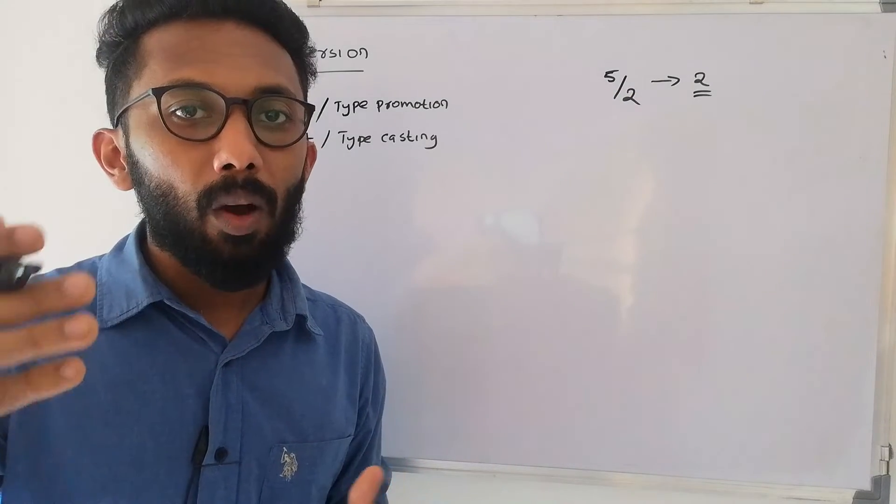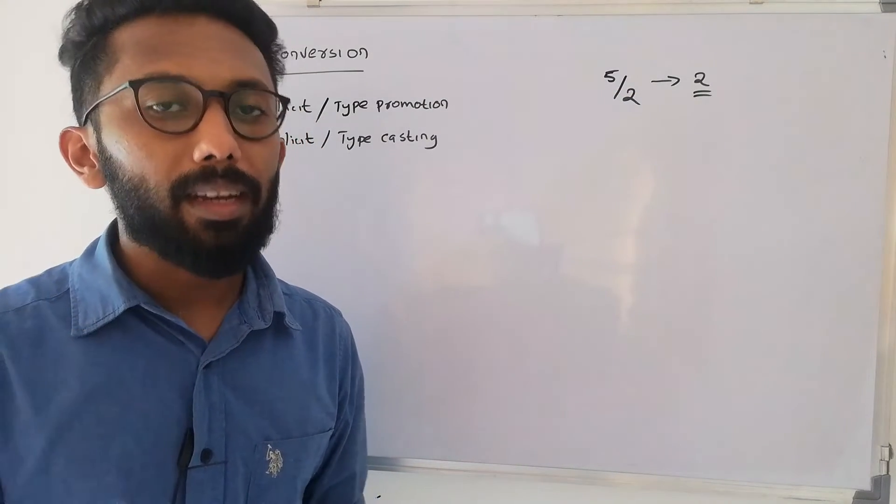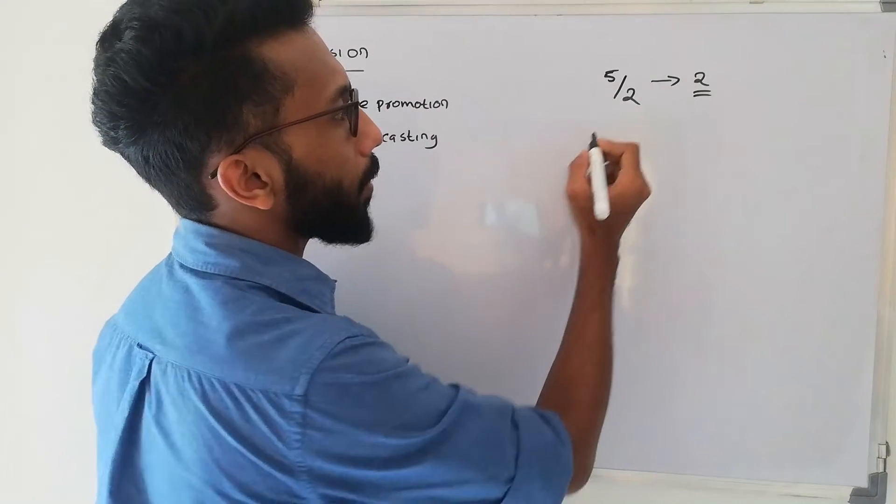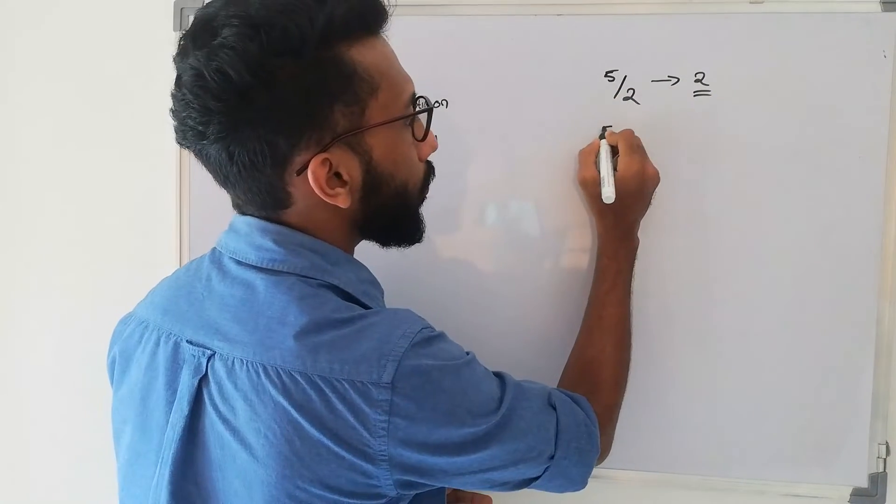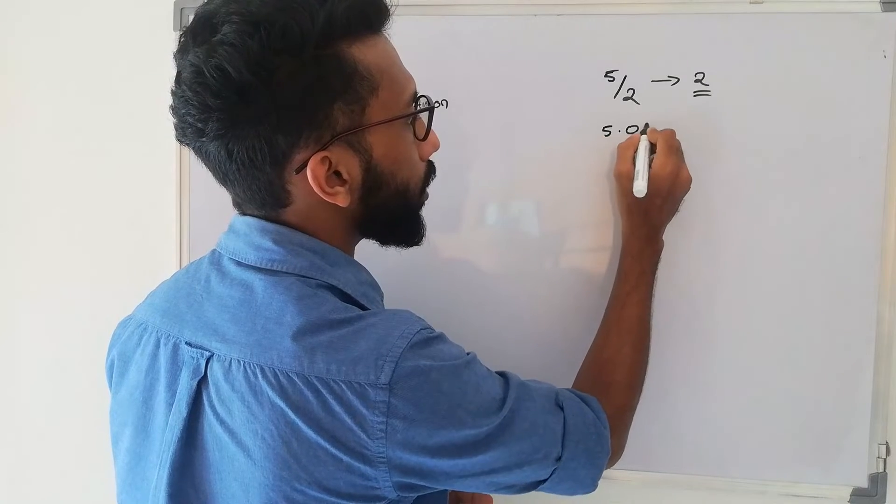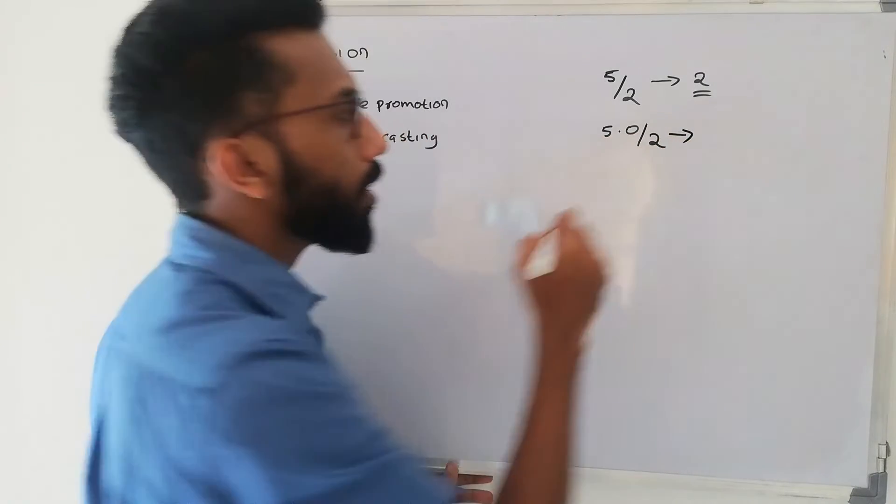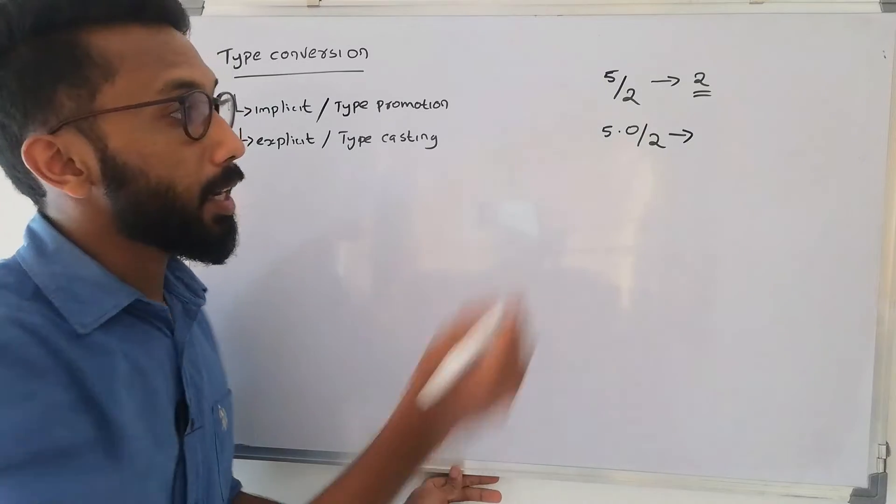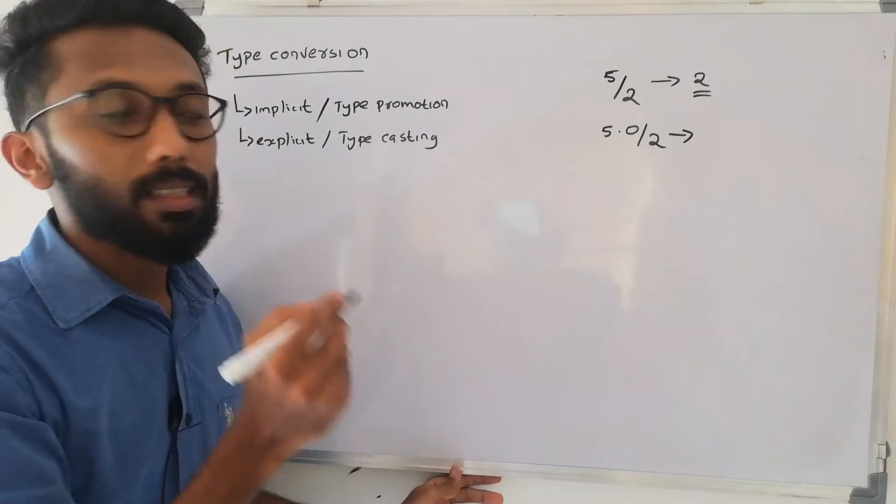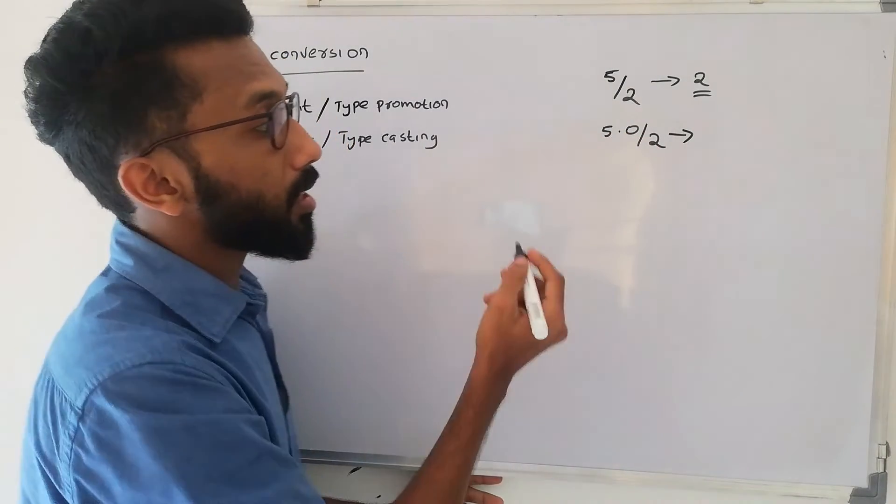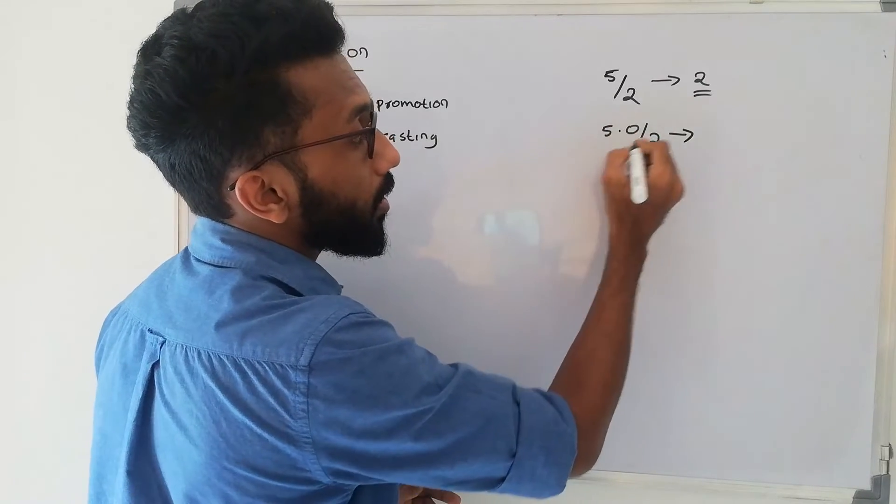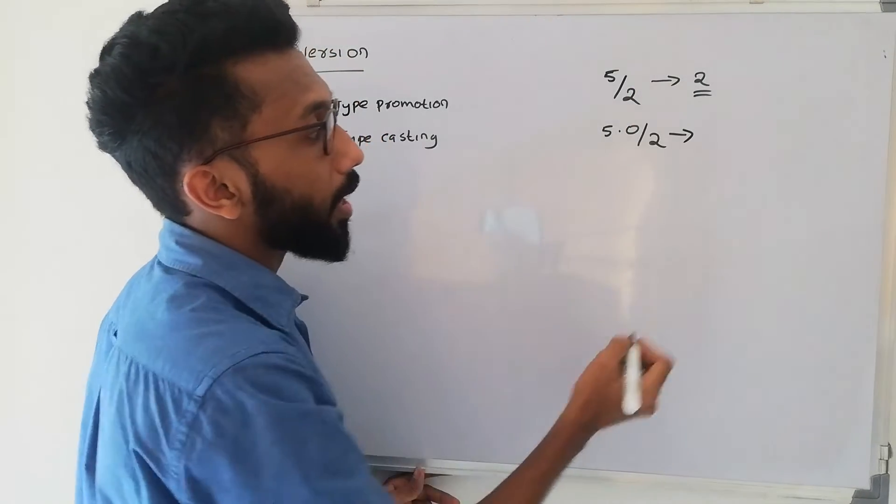We will write about the integer. What is the type of expectation. Let me write that in an integer. 5 by 2, 5.0 divided by 2.